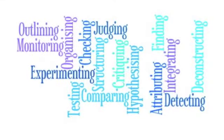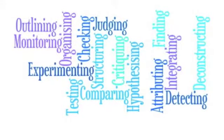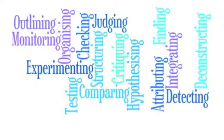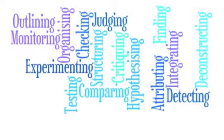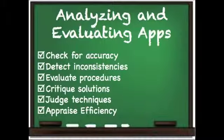Here are some key words for both levels including comparing, organizing, deconstructing, attributing, outlining, binding, structuring, and integrating among many more. Some criteria to look for is if the app asks students to check for accuracy, detect inconsistencies, evaluate procedures, critique solutions, judge techniques, and appraise efficiency.